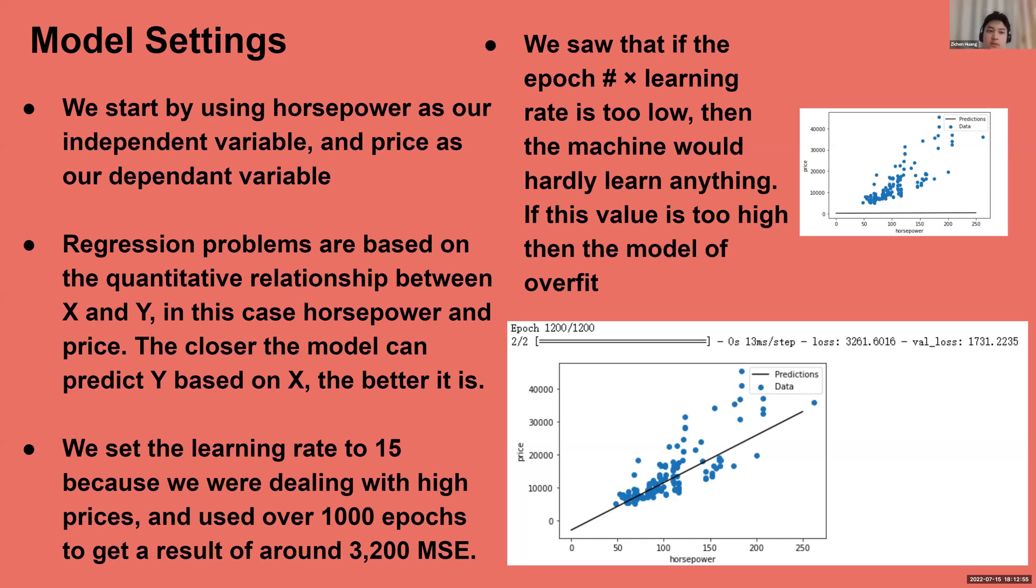I'll talk about our model settings. As we gain our data, we start by using horsepower as our independent variable, the input X, and price as our dependent variable, which is our output or prediction, Y. The regression problems are actually based on the quantitative relationship between X and Y. The quantitative relationship is shown in this picture, the dots and scattered plots for both price and horsepower. The closer the model can predict Y based on X, the better it is.